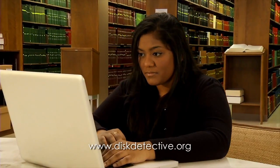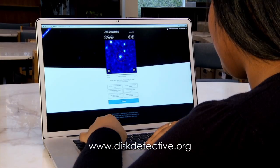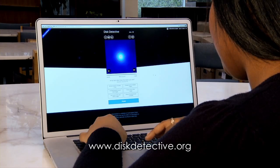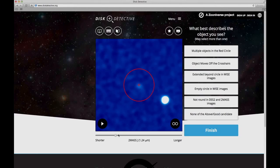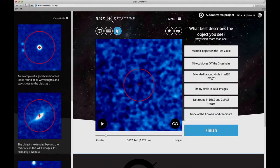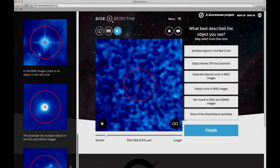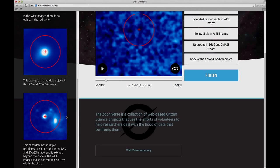At diskdetective.org, you'll see animated flipbooks of images from the WISE All-Sky Survey and other projects. Some images show protoplanetary and debris disks, the homes of extrasolar planets. Others contain galaxies, asteroids, nebulae, and other objects.